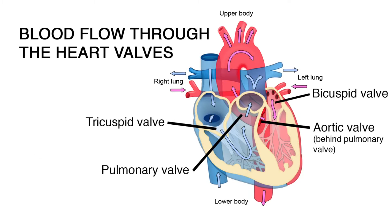Blood flows from the right atrium through the tricuspid valve to the right ventricle, then on through the pulmonary valve to the pulmonary artery and lungs. Pulmonary veins return blood to the left atrium, through the bicuspid or mitral valve, to the left ventricle, and through the aortic valve to the aorta and the rest of the body.